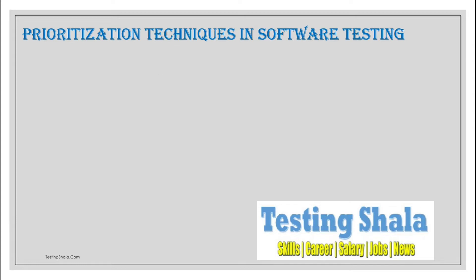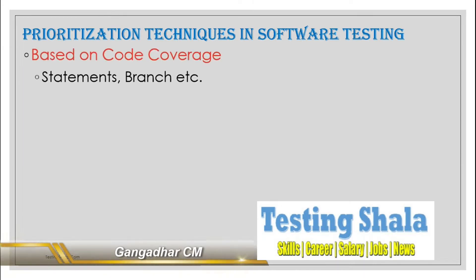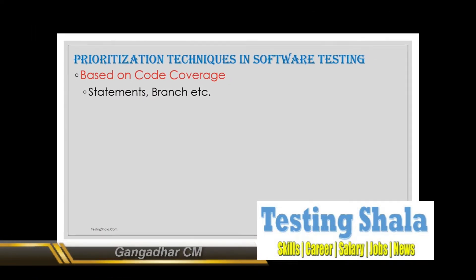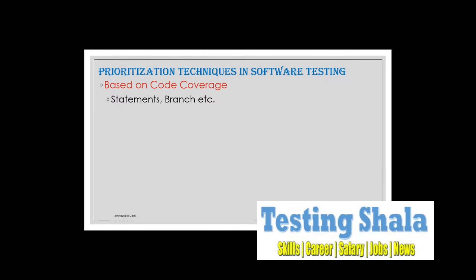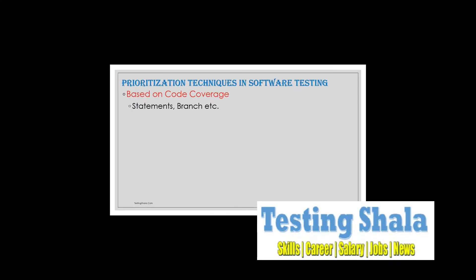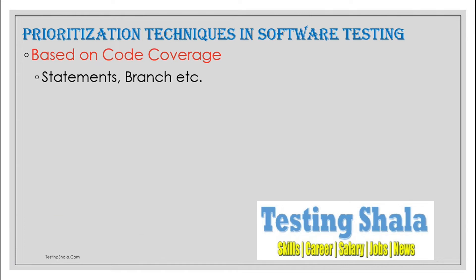What are prioritization techniques in software testing? There are various prioritization techniques we normally use in software testing. There are limited resources and limited budget available for any project — we cannot keep doing unneeded things every day. Because of that, we use these prioritization techniques to ensure we can optimize our testing and our test cases and test scenarios.